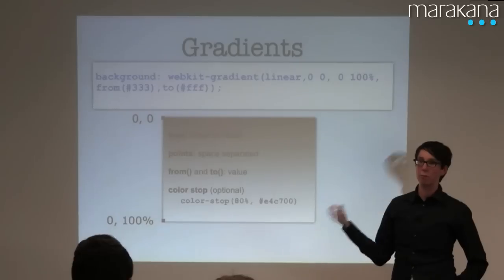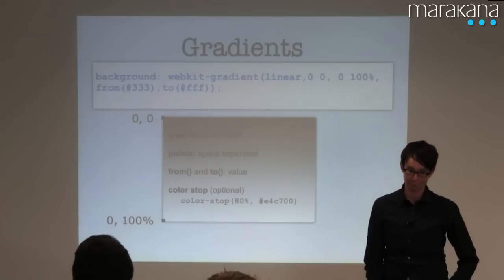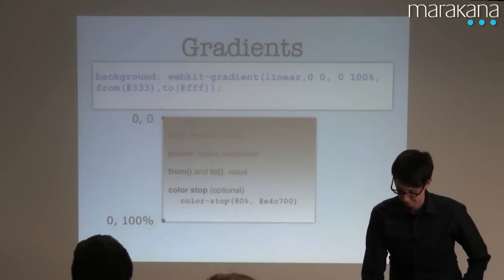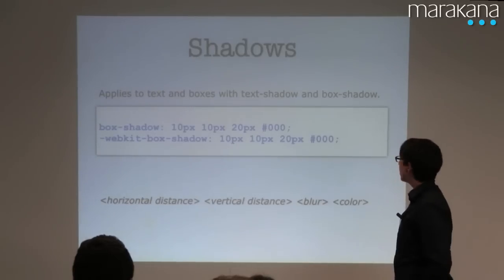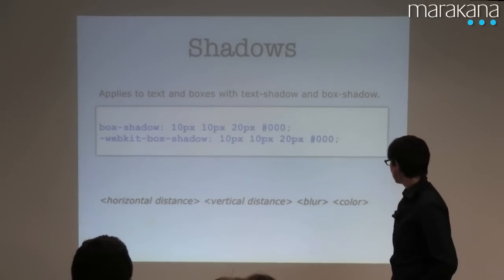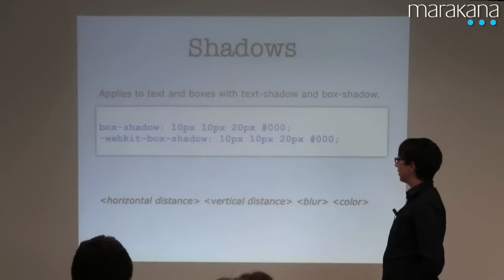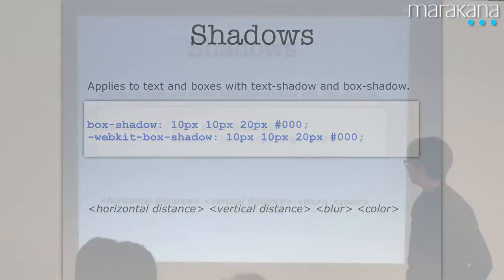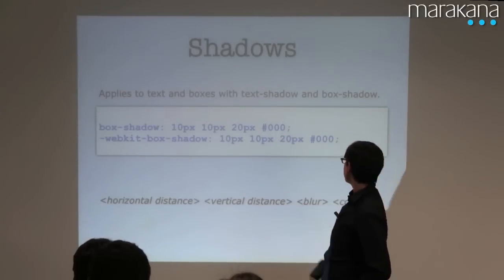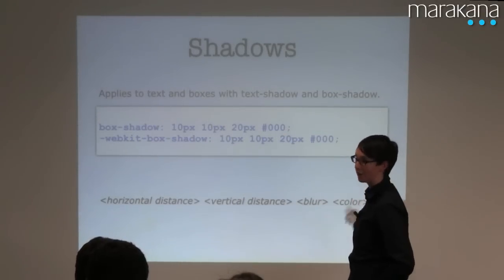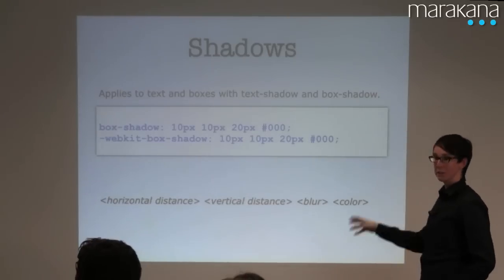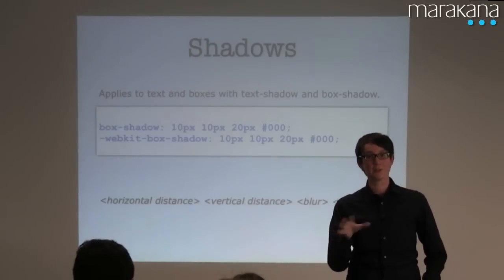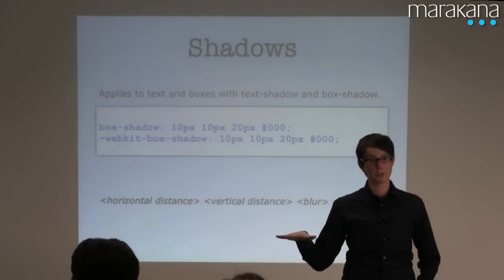Shadows — sort of like in PowerPoint. You can now add a drop shadow to a box or a piece of text. It's pretty straightforward: you give it some distances, a blur, and a color. It's kind of a big deal in some ways because again, you save having to use images for this kind of stuff.